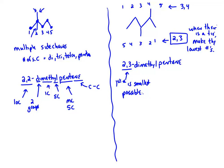Every time there's more than one way to do something, there's a rule that says which way we should do it, so that when we have the name of a molecule there should be one unique name for every molecule. Even though you could call it 3,4-dimethylpentane and someone would draw the same molecule, we use the naming rules to standardize.